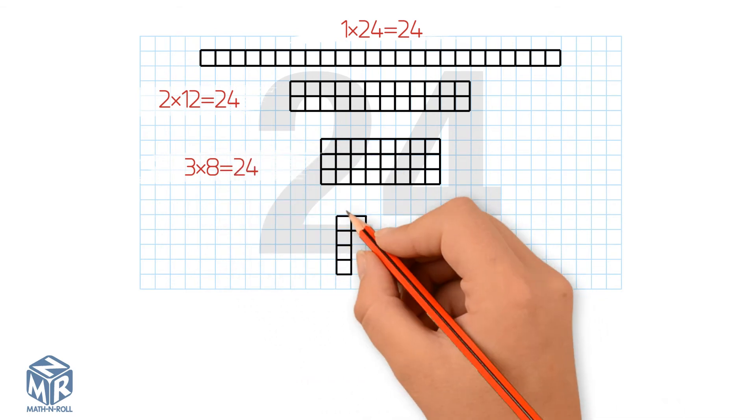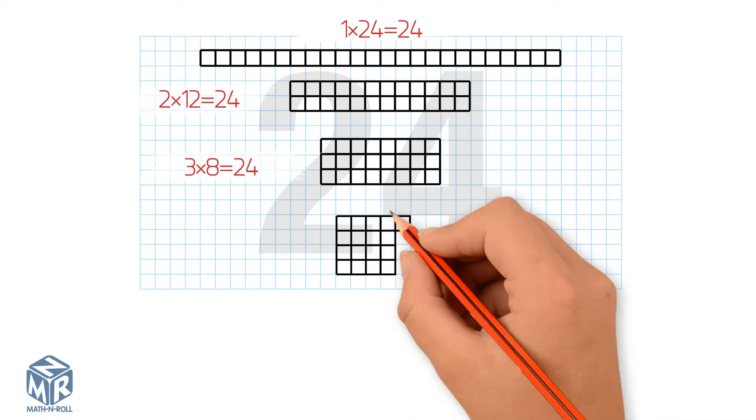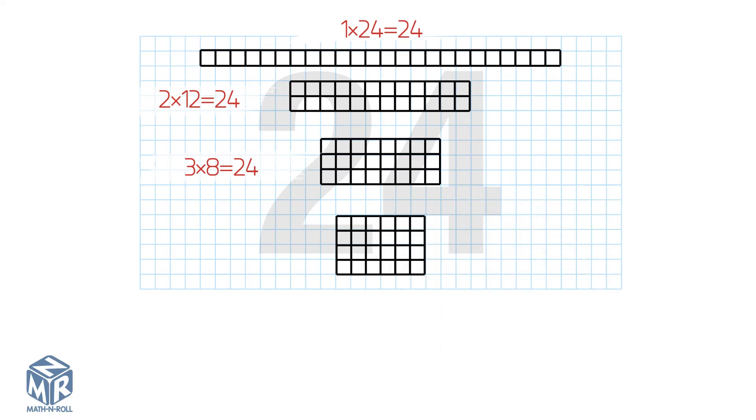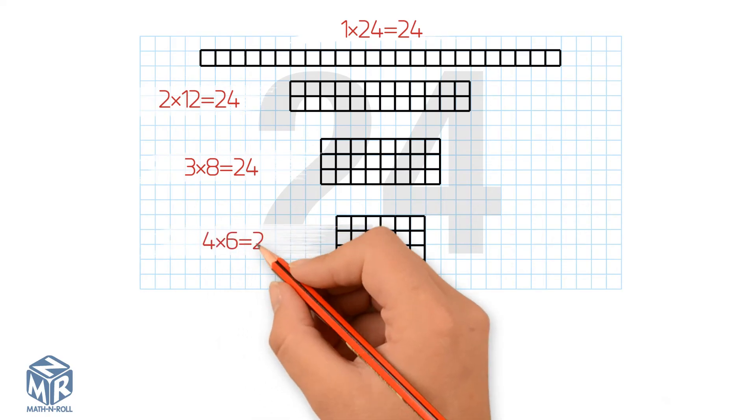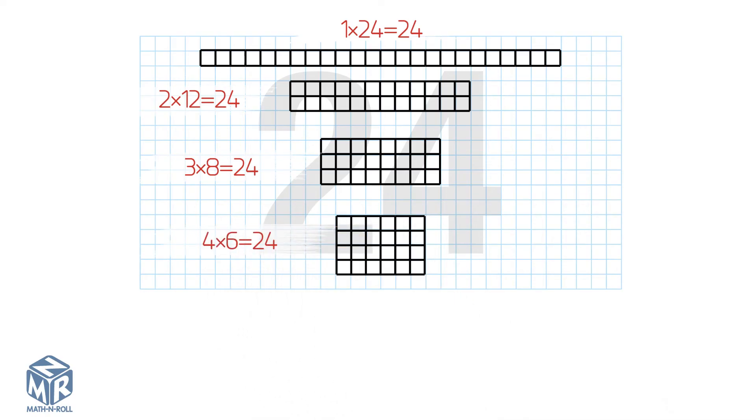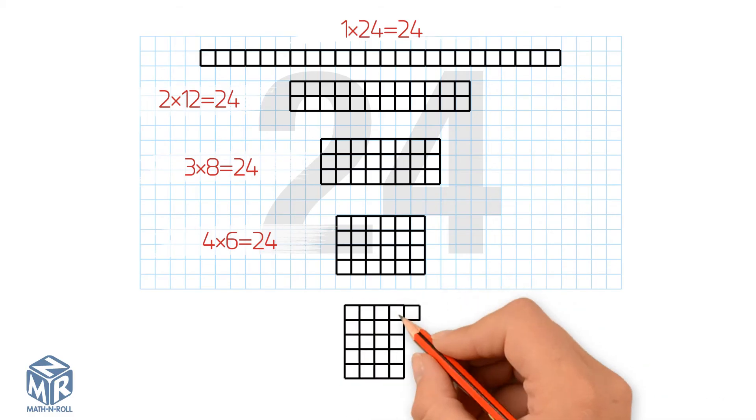Let's do the same with 4 rows. We have 6 even columns, so 4 times 6 is a factor pair. Let's try it with 5 rows. We can't divide 24 by 5 without a remainder. So 5 is not a factor.